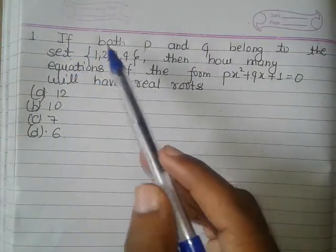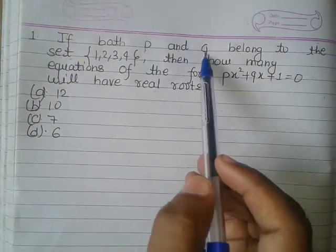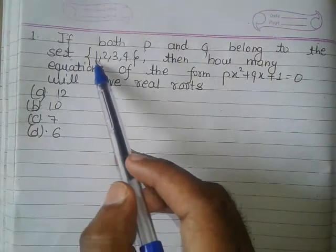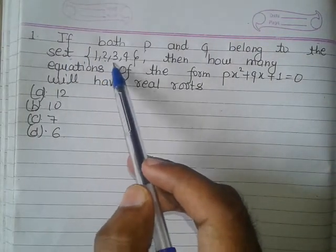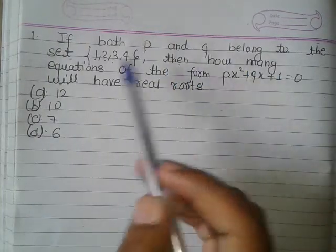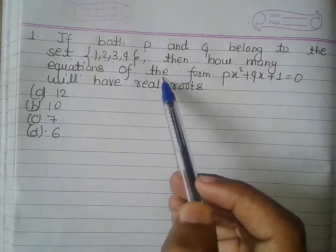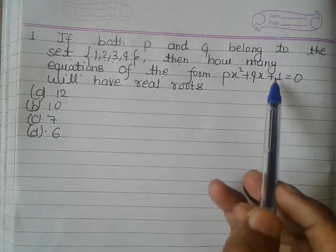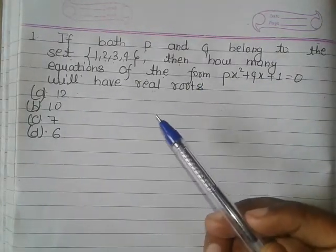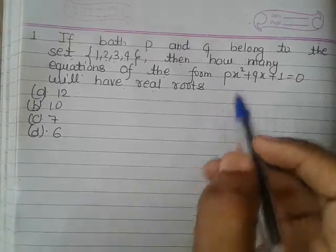If both P and Q belong to the set {1, 2, 3, 4}, then how many equations of the form Px² + Qx + 1 = 0 will have real roots?